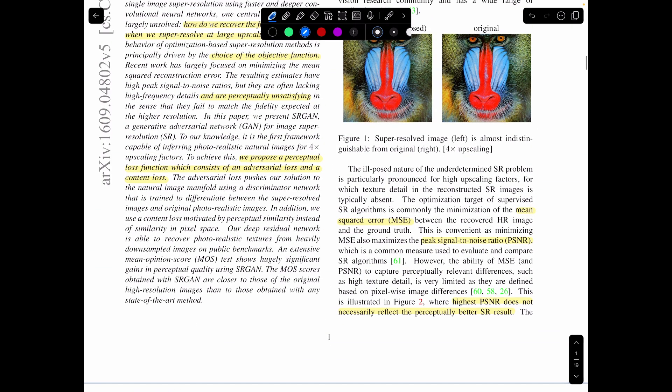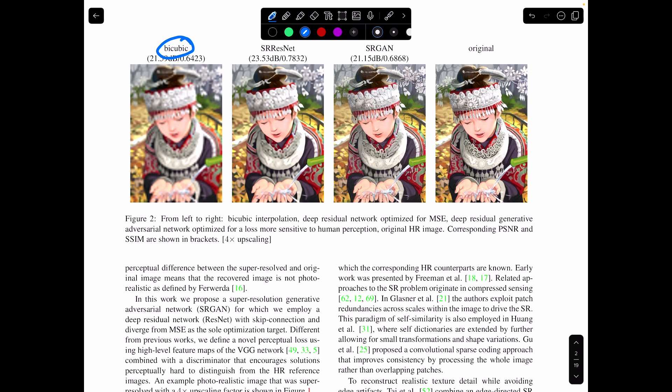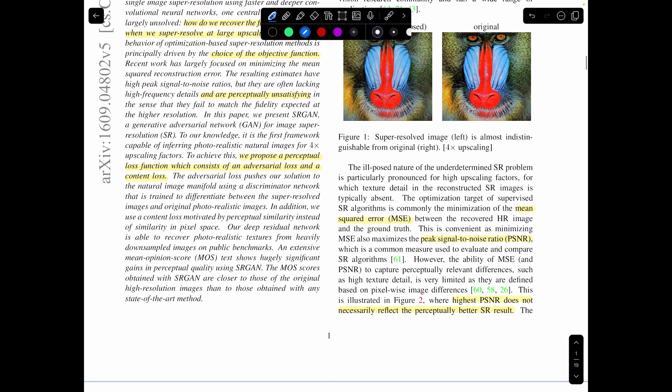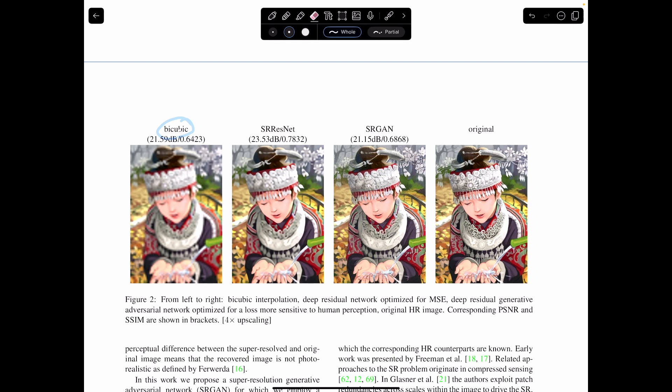And so there have been previous works on this. Some of these will use super-resolution convolutional neural networks. You'll pass in a low-resolution image in the input, and it will output a high-resolution image. And then these works will often also use mean squared error, which is just the difference between two things. And the authors note that this kind of works well with another metric used in images called peak signal-to-noise ratio.